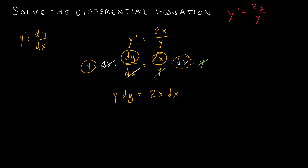Now I want to integrate. So I integrate both sides: the integral of y dy gives me y squared divided by 2, and 2 times the integral of x dx gives me 2 times x squared divided by 2. On the right side, that 2 cancels out.